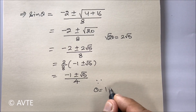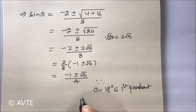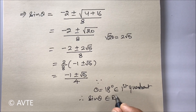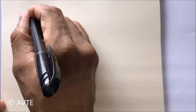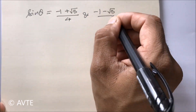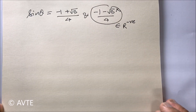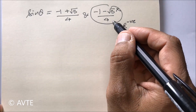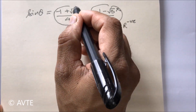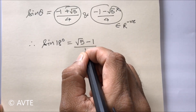Because theta is 18 degrees and belongs to the first quadrant, all trigonometric ratios are positive, and hence sine theta will be positive. Out of the two values obtained from the discriminant, we reject the negative one since sine 18 degrees must give a positive value. Therefore, sine 18 degrees equals root 5 minus 1 upon 4.